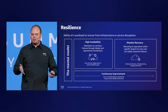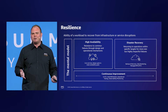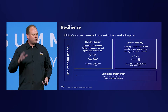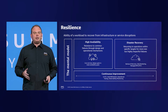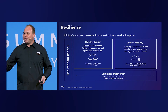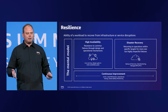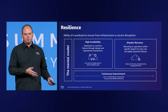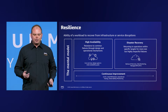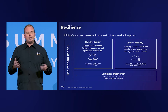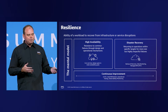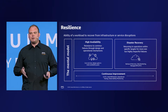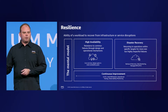A workload might consist of a subset of resources in a single AWS account, or it could span multiple accounts and even multiple regions. There are three mental models to keep in mind: high availability — how can you build a system to be highly available with resistance to common failure modes; disaster recovery — how can you recover your system if you run into those rare failure modes; and continuous improvement — how do you make changes quickly in the event of a failure so that you can recover in time.